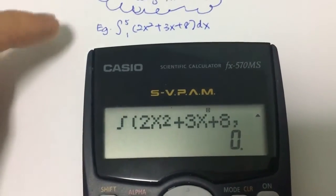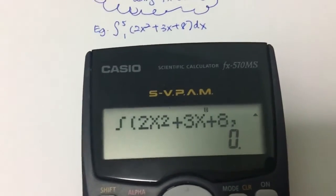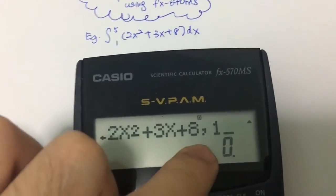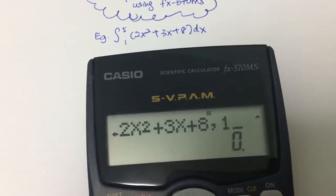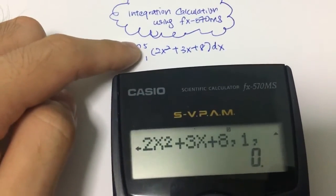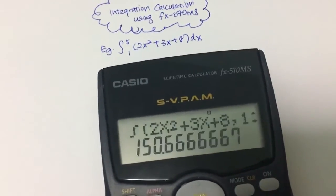...is to include the lower value down here, the lower range, which is 1. Of course, remember to put a comma. After that you put 1 and then the upper range, which is 5. Then put a close bracket and you equate them.